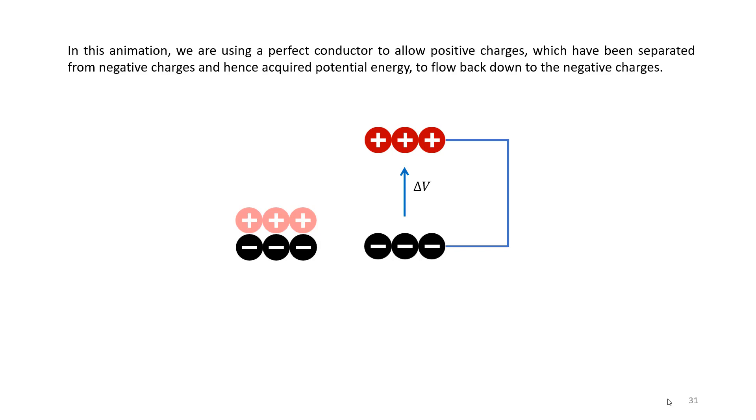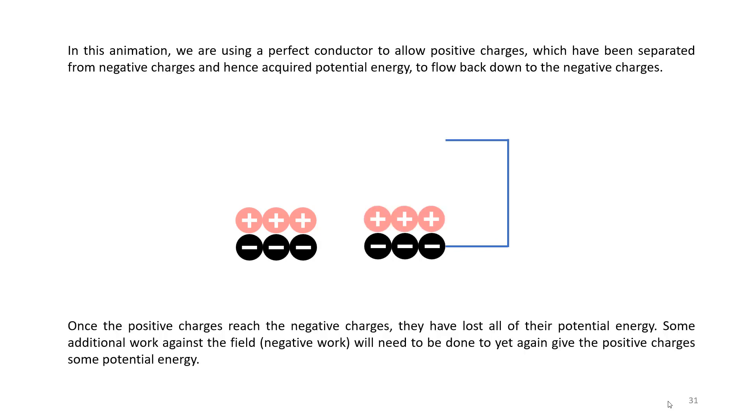Now we place a perfect conductor between the site where the positive charges are and the site where the negative charges are. The positive charges will flow super quickly down to the negative charges and lose their potential energy. This is not terribly useful, however, because we will just get back to where we started.